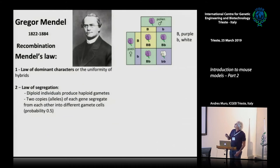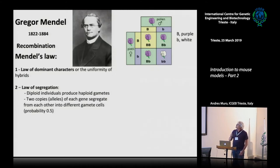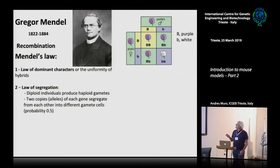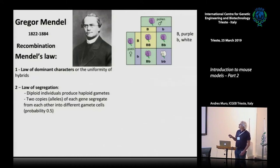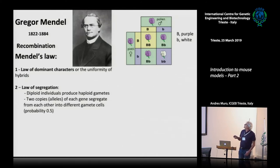I suppose you all know this story. Gregor Mendel formulated the recombination laws. We have characters that are dominant and characters that are recessive. Diploid individuals produce gametes — we have two copies and then they segregate, as indicated here.